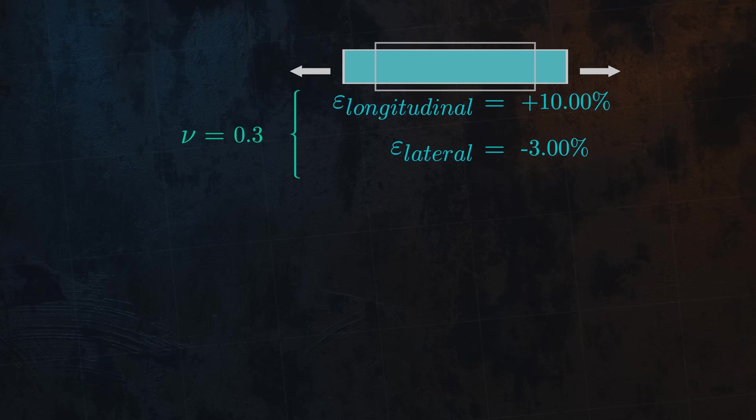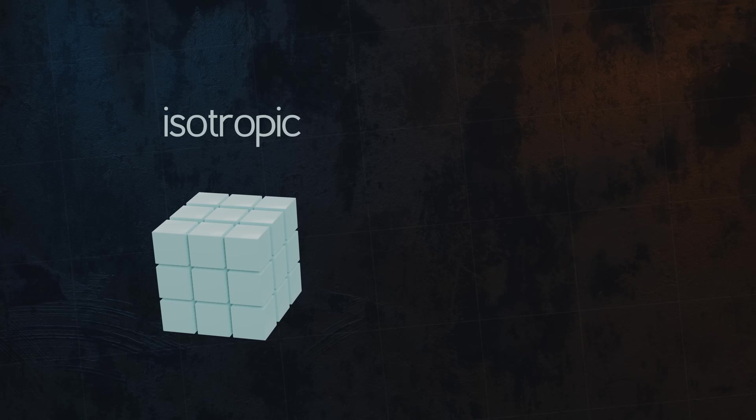Now is probably a good time to mention that this equation and the concepts described in this video only apply for isotropic materials, which are materials which have the same properties in all directions. We are also assuming that the materials are deforming within the elastic region. Things get a bit more complicated when plastic deformation is involved.